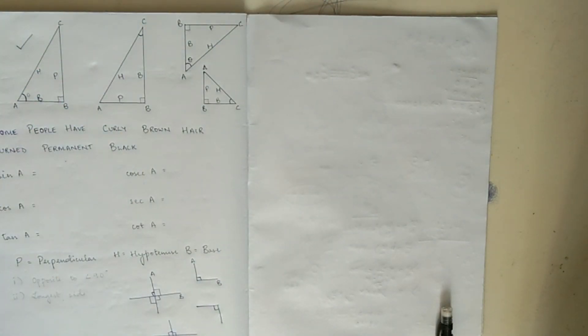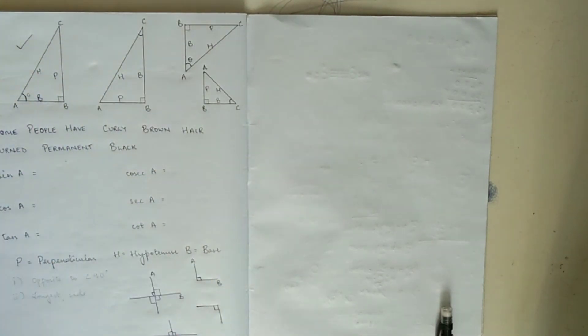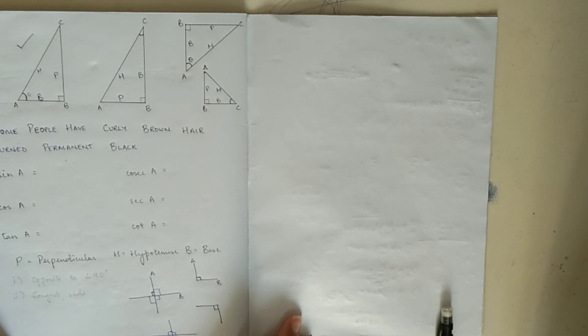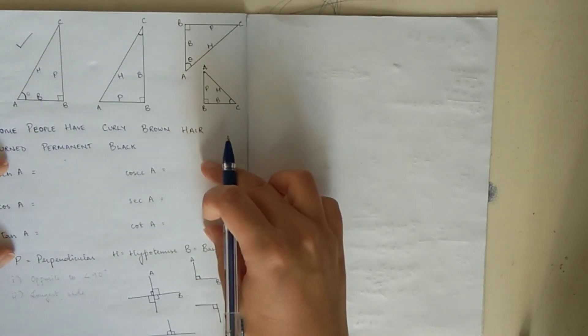I've written a phrase over here — it's kind of an inside joke, but you'll find it very helpful to learn these formulas by heart. It's a mnemonic for the T-ratios. There are six T-ratios in trigonometry.